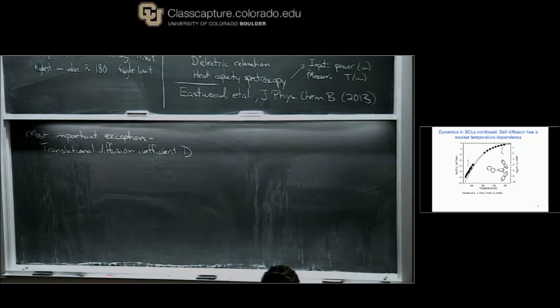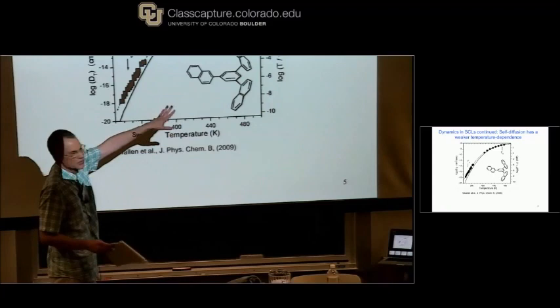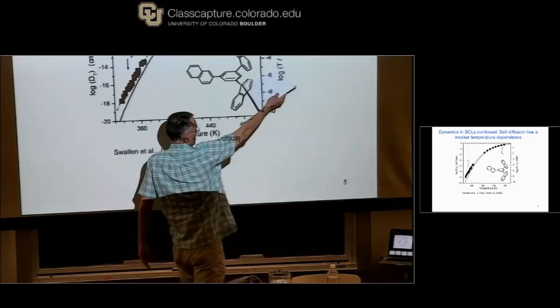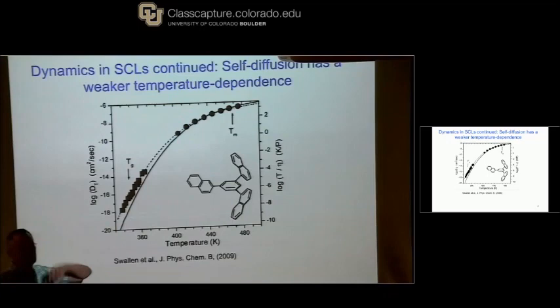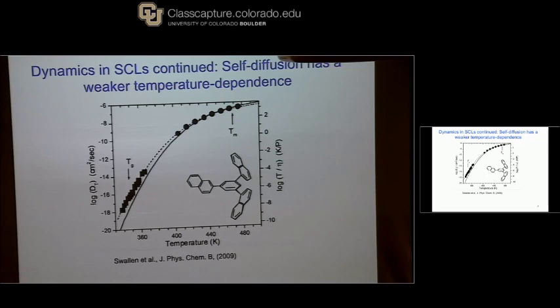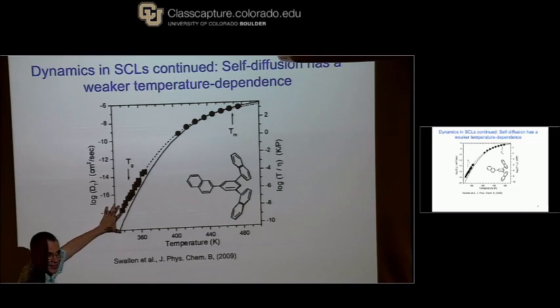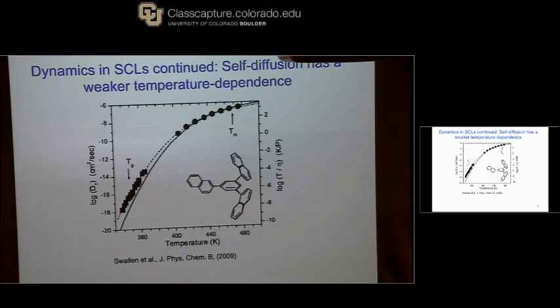Let me explain what's plotted here. This is tris-naphthylbenzene. The right-hand side is the viscosity corrected by temperature — that's the solid line, the standard answer we get from dielectric relaxation, NMR, and many different techniques. This is the answer we get from translational diffusion — it's a little bit different. You might say it doesn't look that different, but I want to emphasize two points: this is more than a factor of 100, and I spent about a decade of my life trying to get this data. So that factor of 100 is important.